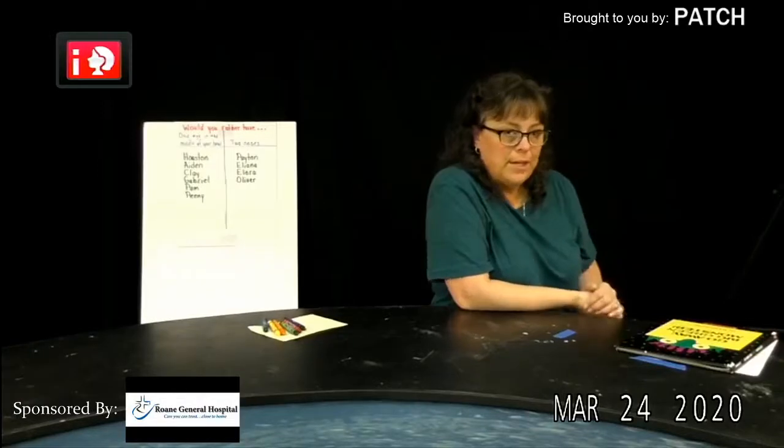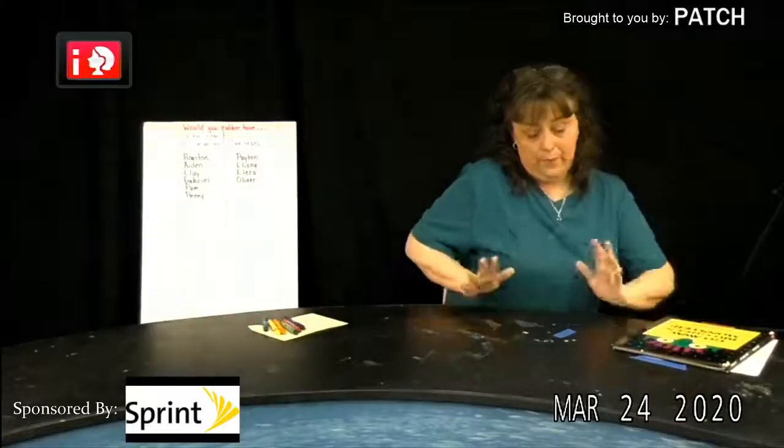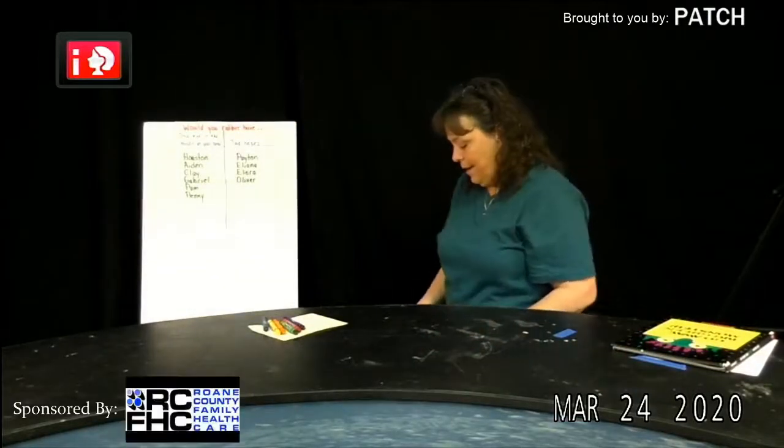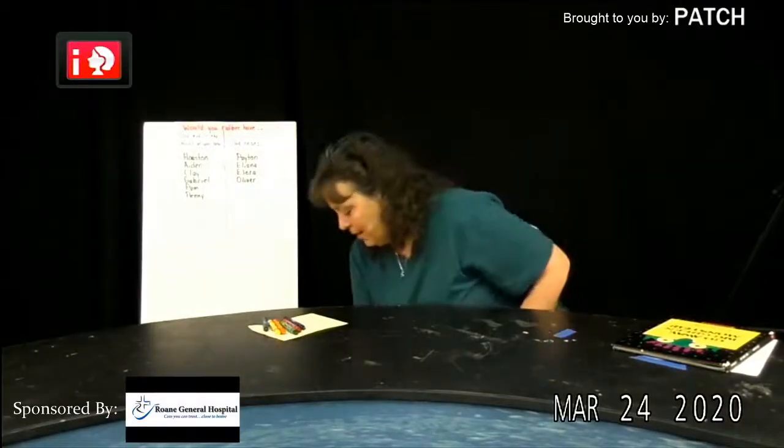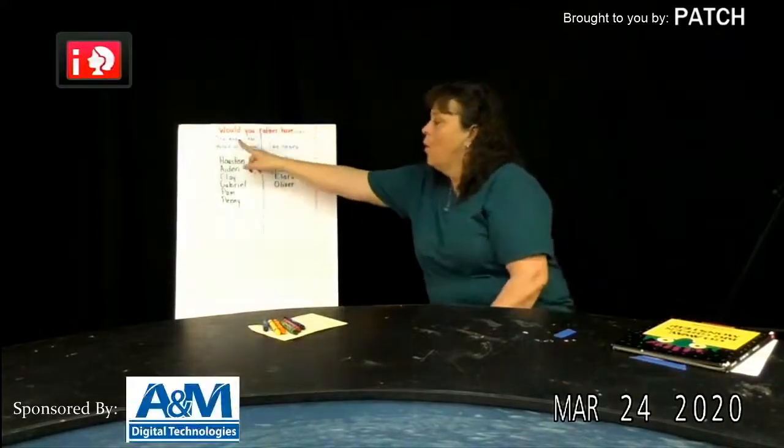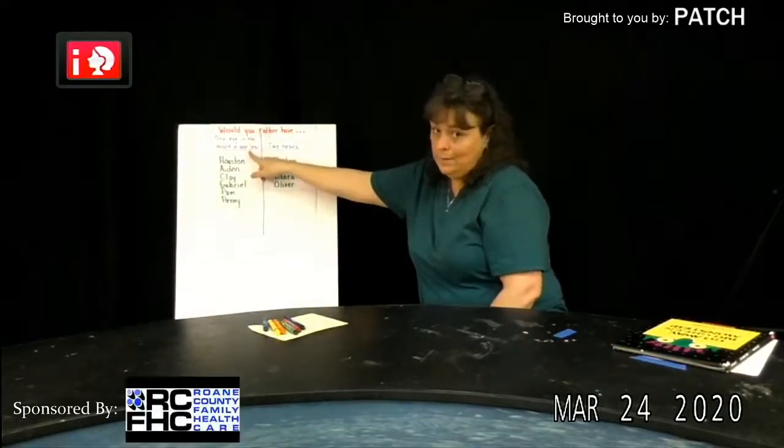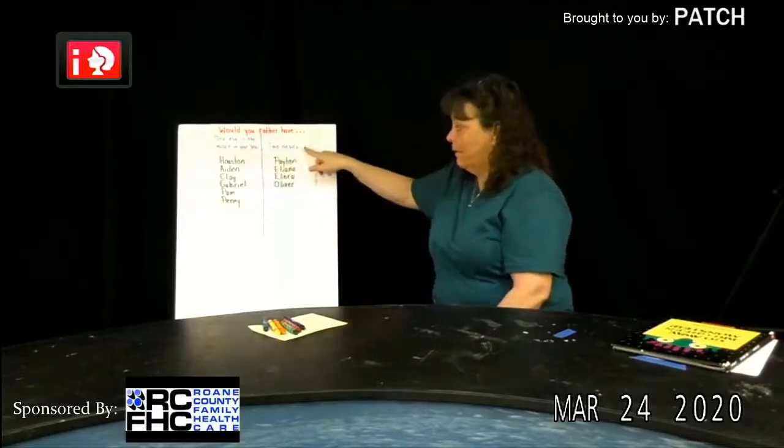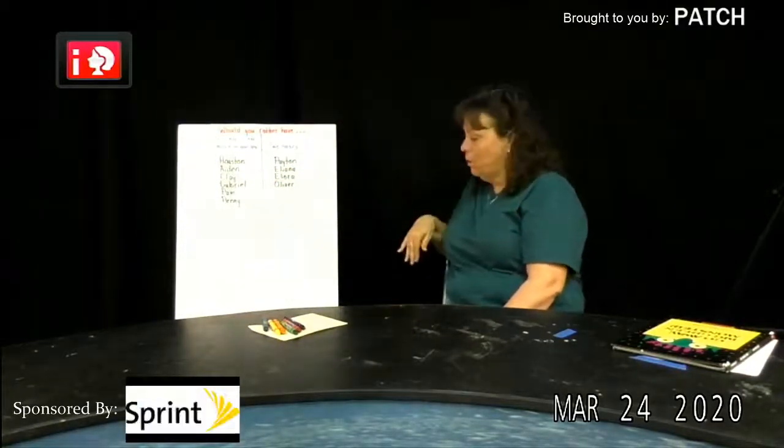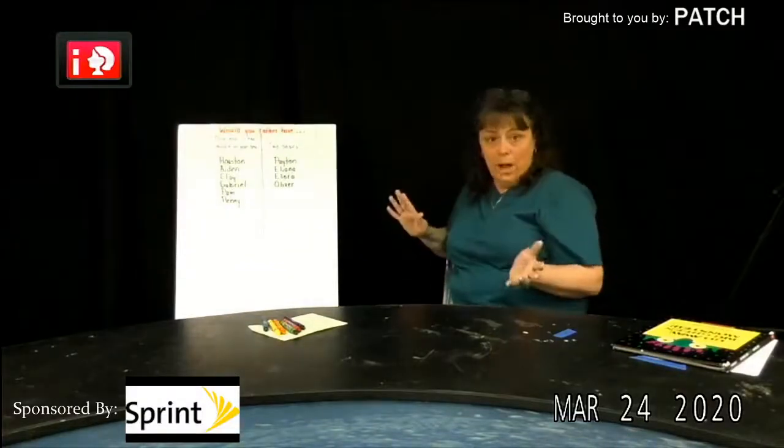Now we have a couple other things that we need to do that kind of go along with the book that we do at our class at Building Blocks. We have a would you rather question every day. And it was, would you rather have one eye in the middle of your head or would you rather have two noses? So at home, you can go around and you can ask everybody in your house.